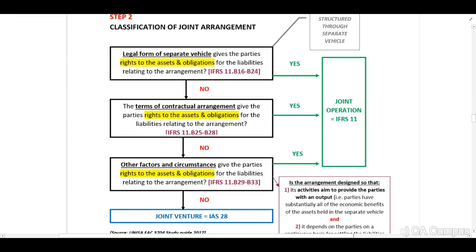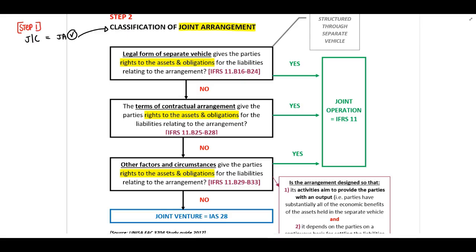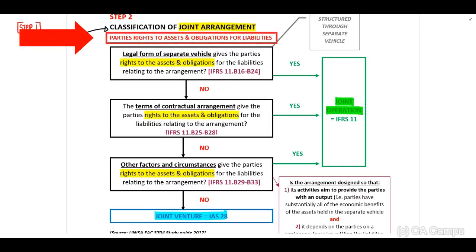I want to focus on step two. Before we look at step two, it is extremely important that you understand that we have already determined in accordance with step one that there is joint control. Therefore, this is a joint arrangement in terms of IFRS 11, and we now need to determine if this joint arrangement is either a joint operation or a joint venture. When determining the classification, the first criteria we need to identify is what are the parties' rights to assets and obligations — we will discuss this by means of three elements.